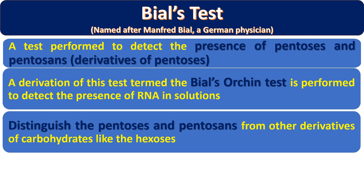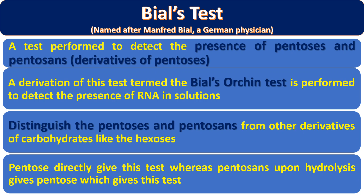Bial's test can easily distinguish pentose and pentosans from other derivatives. It can distinguish pentose from hexose, monosaccharides from disaccharides and polysaccharides. Pentose reacts differently with the reagent and hexose reacts differently — on the basis of their reactions we can differentiate those compounds. Pentose directly gives the test, whereas pentosans are first hydrolyzed to release pentose, which then reacts and gives the test.